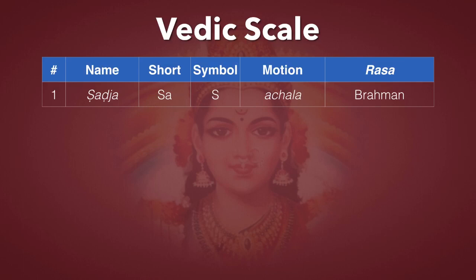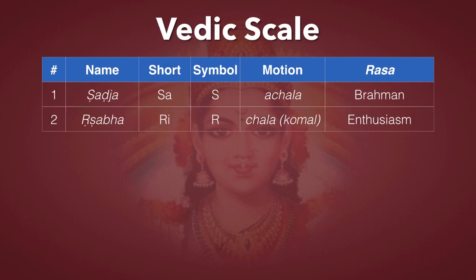The second Swara is Rishabh, or Ri for short. The symbol is R, and it's Chala. It can be Shuddha or Komal, which means natural or flat. It expresses enthusiasm, and when it's flat, it expresses devotion.